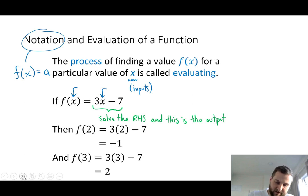So for example here, f(2). Well, we sub in 2 for x. 3 times 2 is 6. Minus 7 is minus 1. So when we evaluate the function at 2, we get minus 1. When we evaluate the function at 3, we get 2.